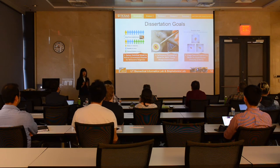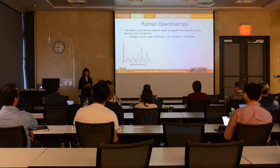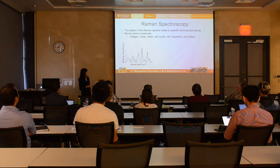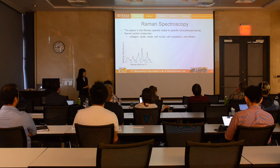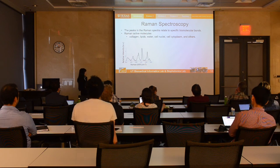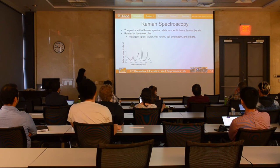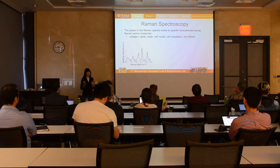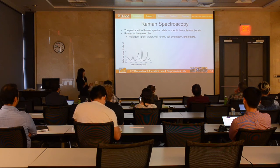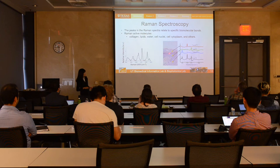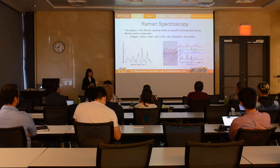Let's focus on problem one first. Since I used Raman, let me briefly introduce it. This is an example of Raman spectra. The x-axis is the Raman shift or wavenumber. The y-axis is the intensity. The peaks in the Raman spectra relate to specific biomolecular bonds. In skin tissue, active Raman molecules include collagen, lipids, and others. Different biomolecular bonds relate to the peaks in the Raman spectra. This is the basis for why we use Raman to classify different types of skin lesions.